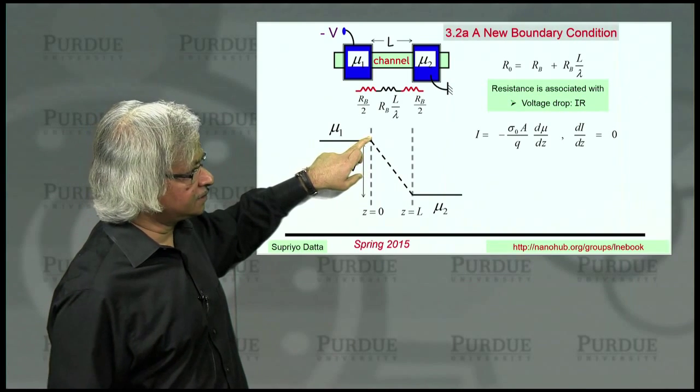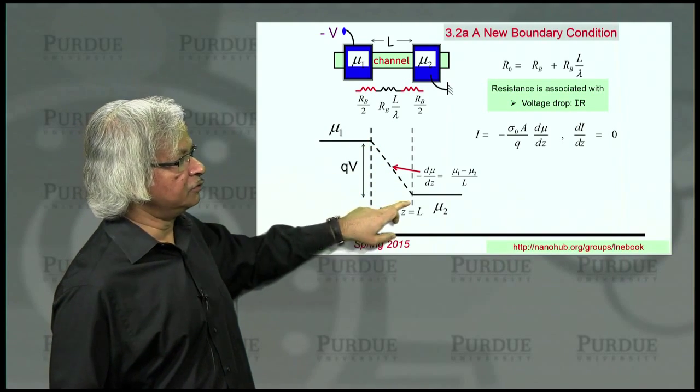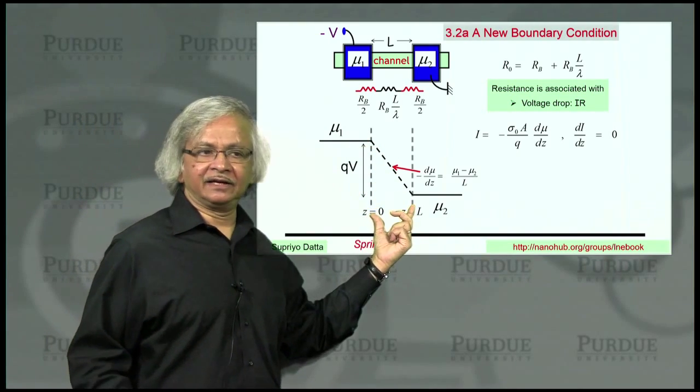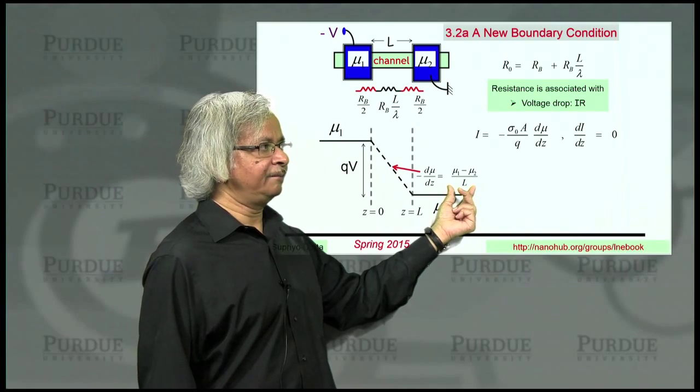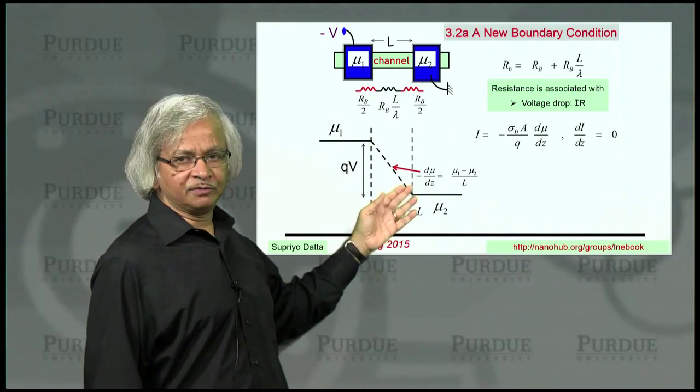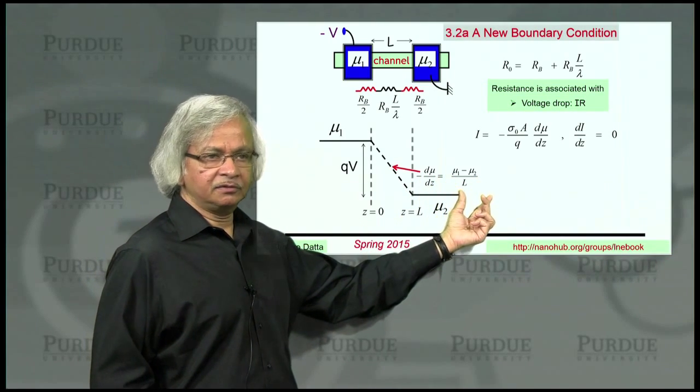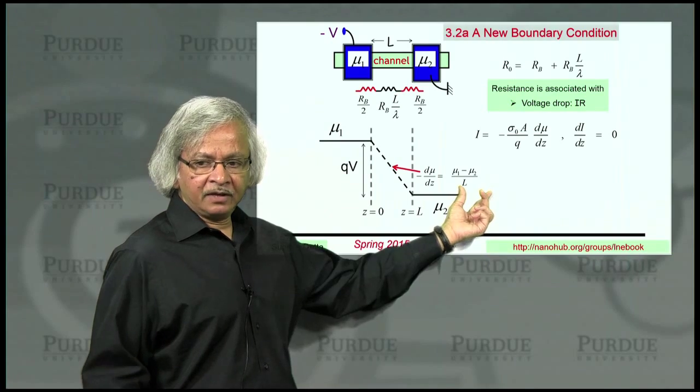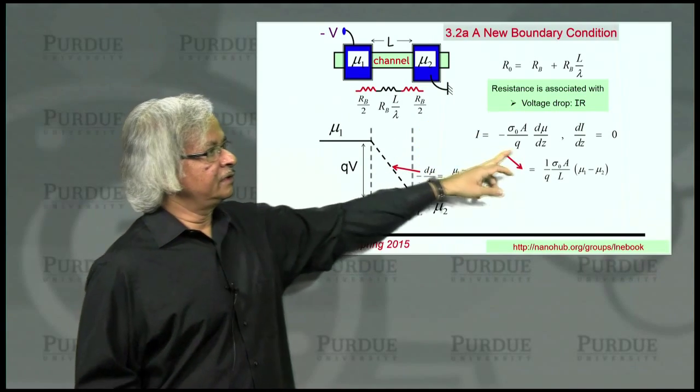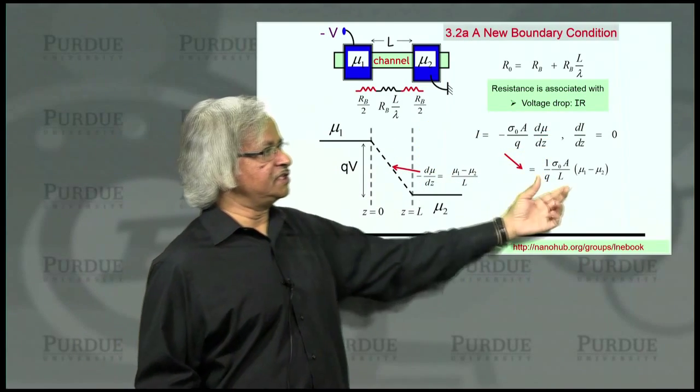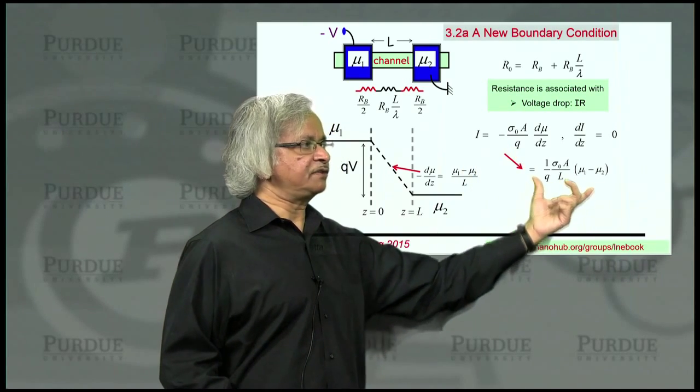Well, so what's the current? Well, we can find the slope. You know, it goes from mu 1 to mu 2 over a distance L. And it's a straight line. So the slope is just mu 1 minus mu 2 divided by L. Of course, it's going down, which means the slope is negative. So that's why minus d mu/dz is mu 1 minus mu 2 divided by L. So I could use this to calculate the current now. So I could put that back in there. For minus d mu/dz, I put in this value, mu 1 minus mu 2 divided by L. And so we have an expression for the current.